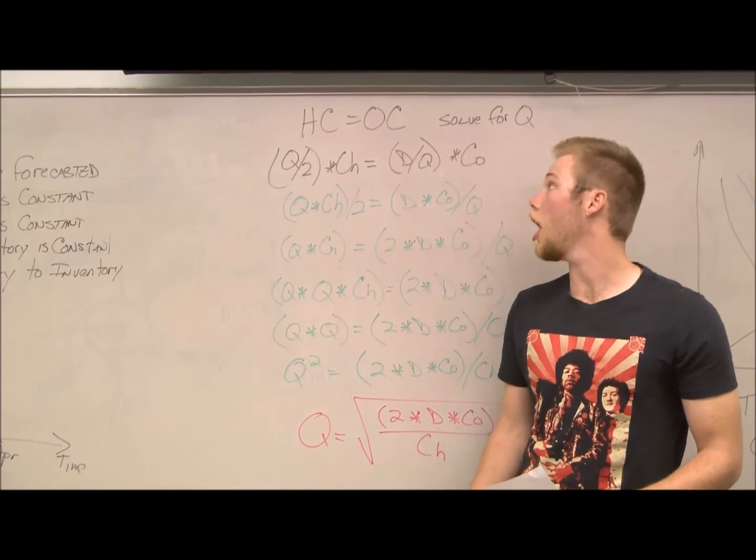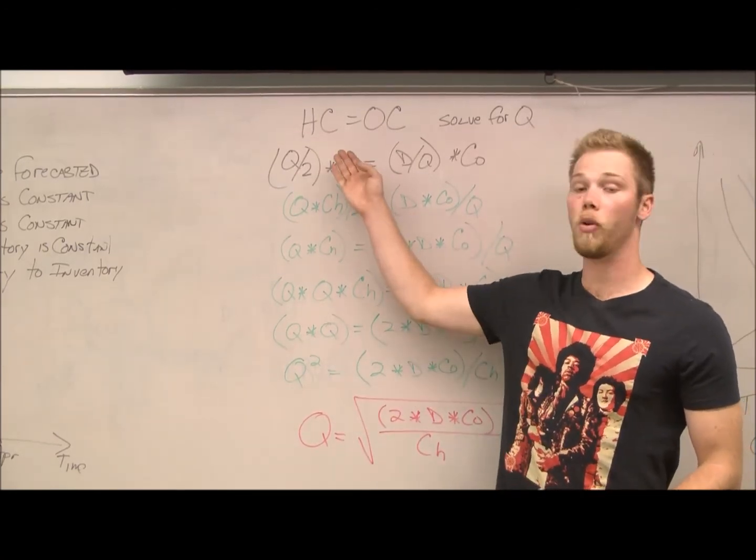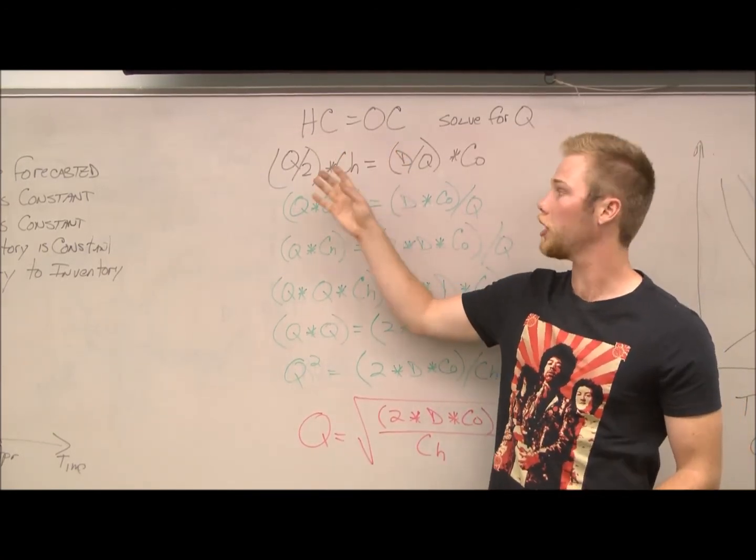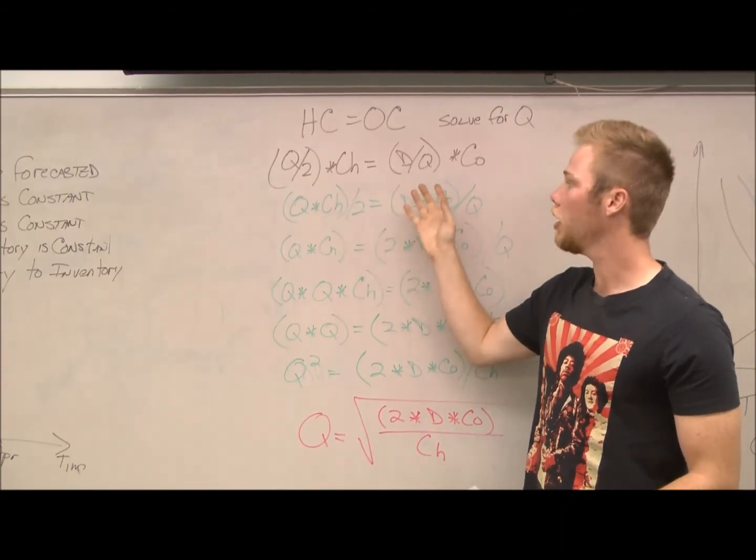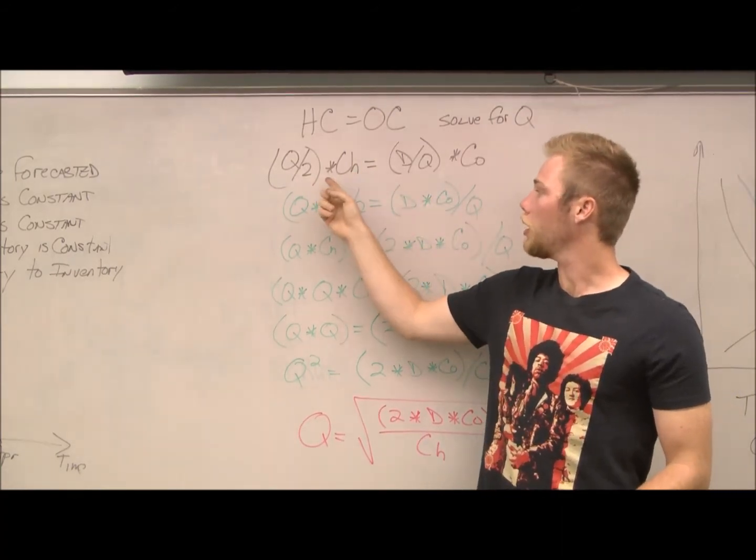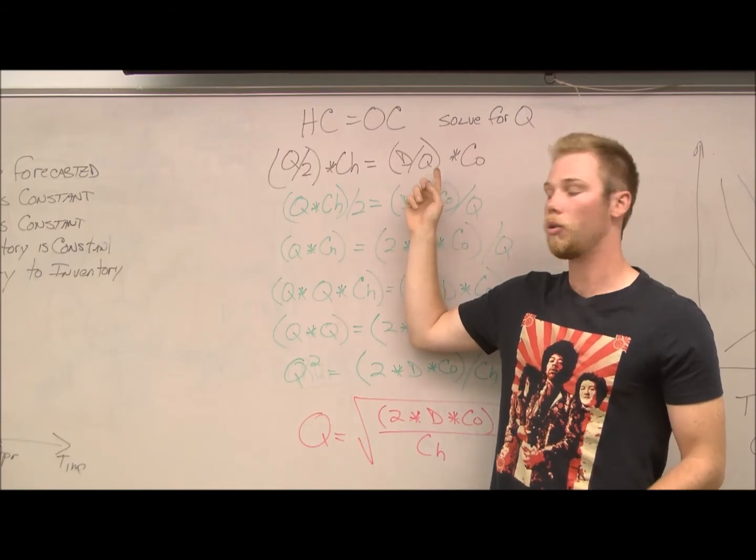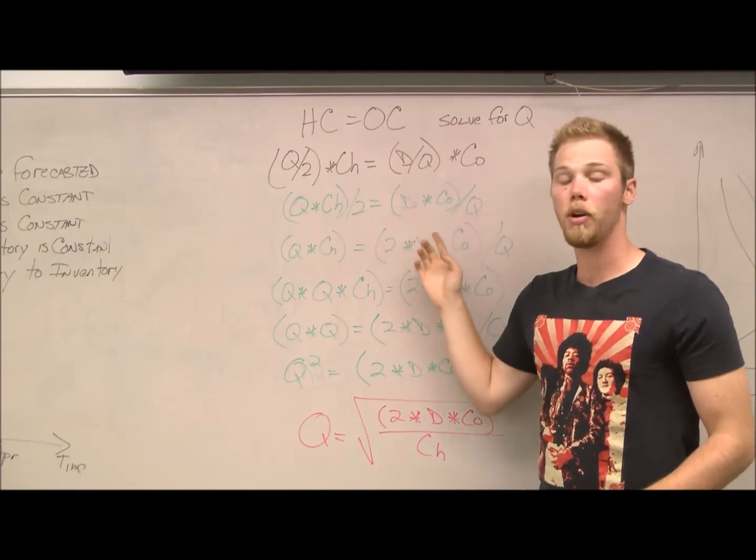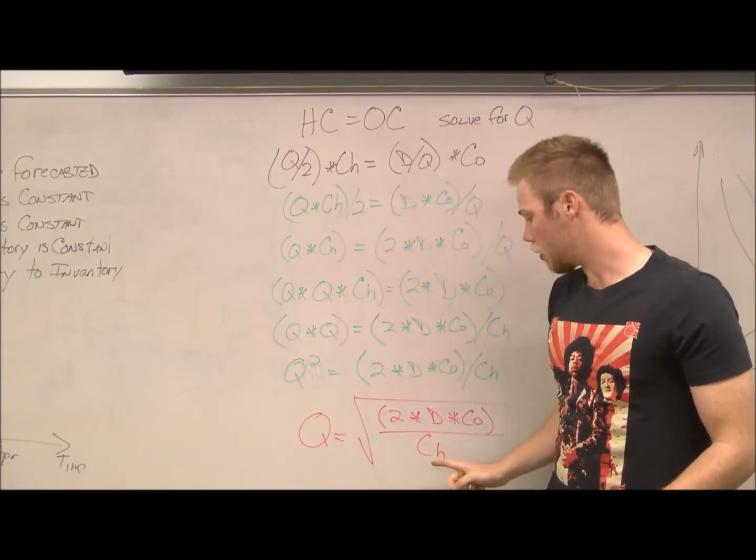When solving for Q, often you can use the proof holding costs equals ordering costs, which is indicated by these proofs right here. This would indicate holding costs and this side would indicate ordering costs. The only part you really need to memorize though is this equation right here.